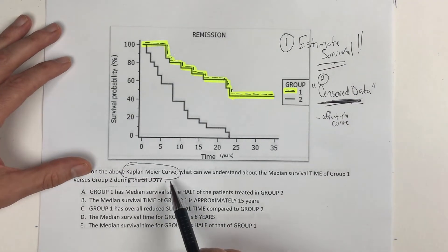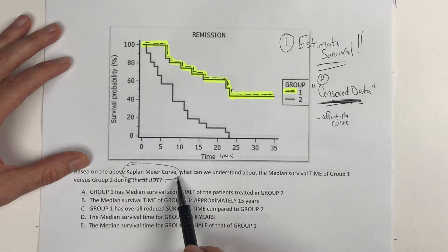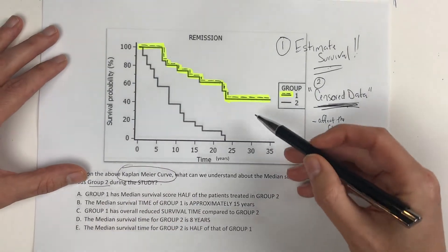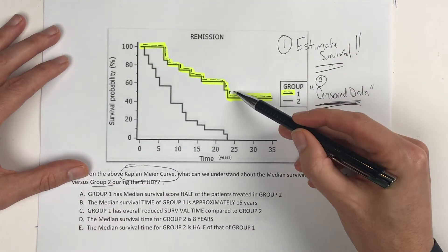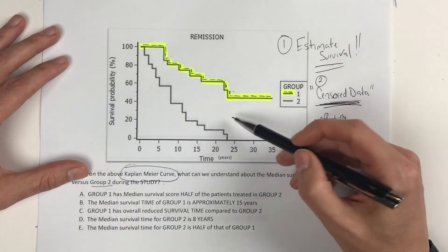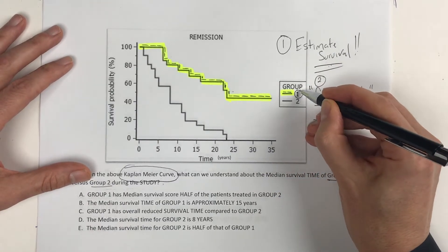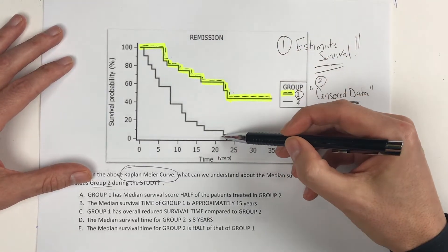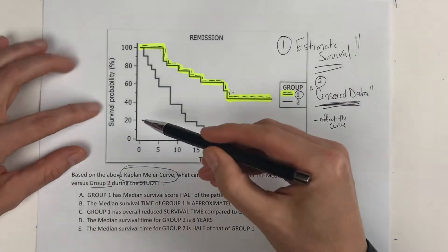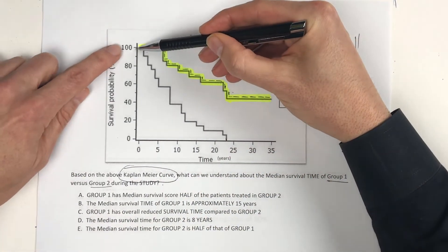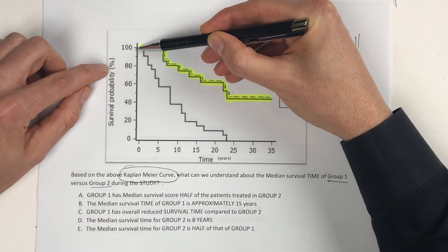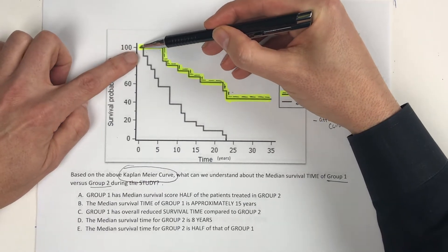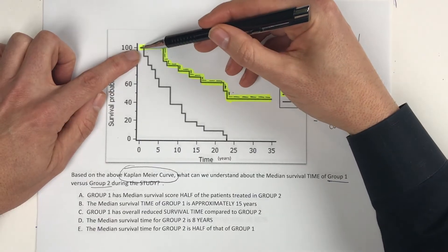Back to the question: based on the above Kaplan-Meier curve, what can we understand about the median survival time of group one versus group two? It could be a treatment group versus a placebo group. On the y-axis it's survival probability — at 100%, when the study began, everybody's alive. And then on the x-axis it's time, shown here in years: 5, 10, 15, 20, 25, 30, and 35 years.